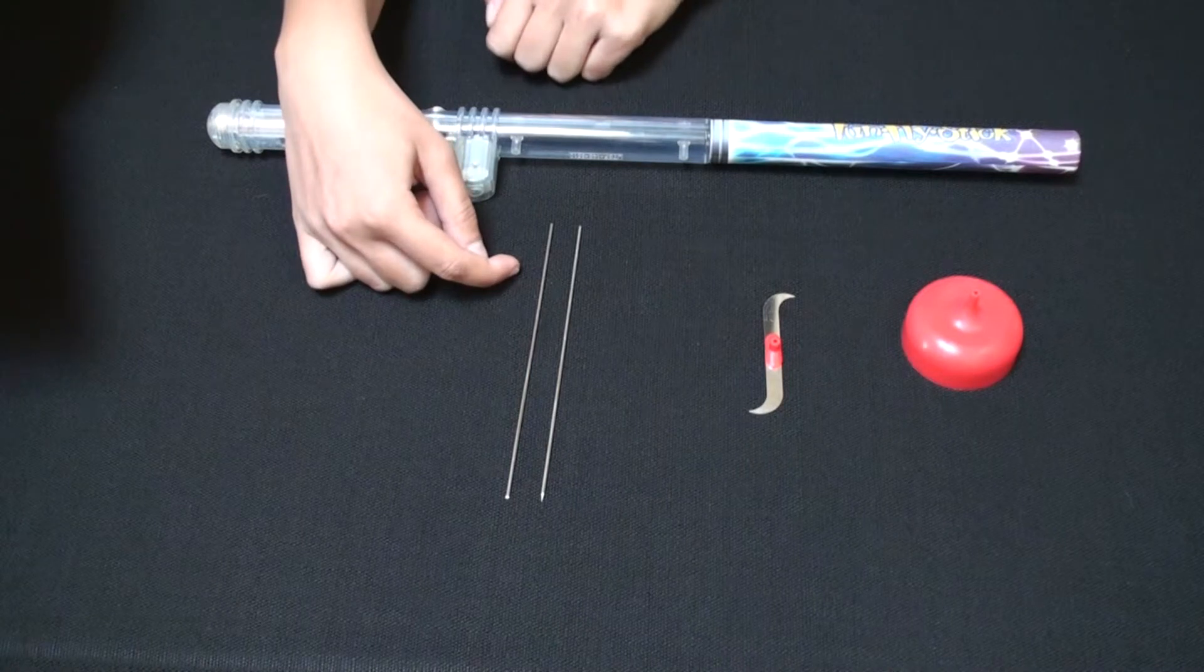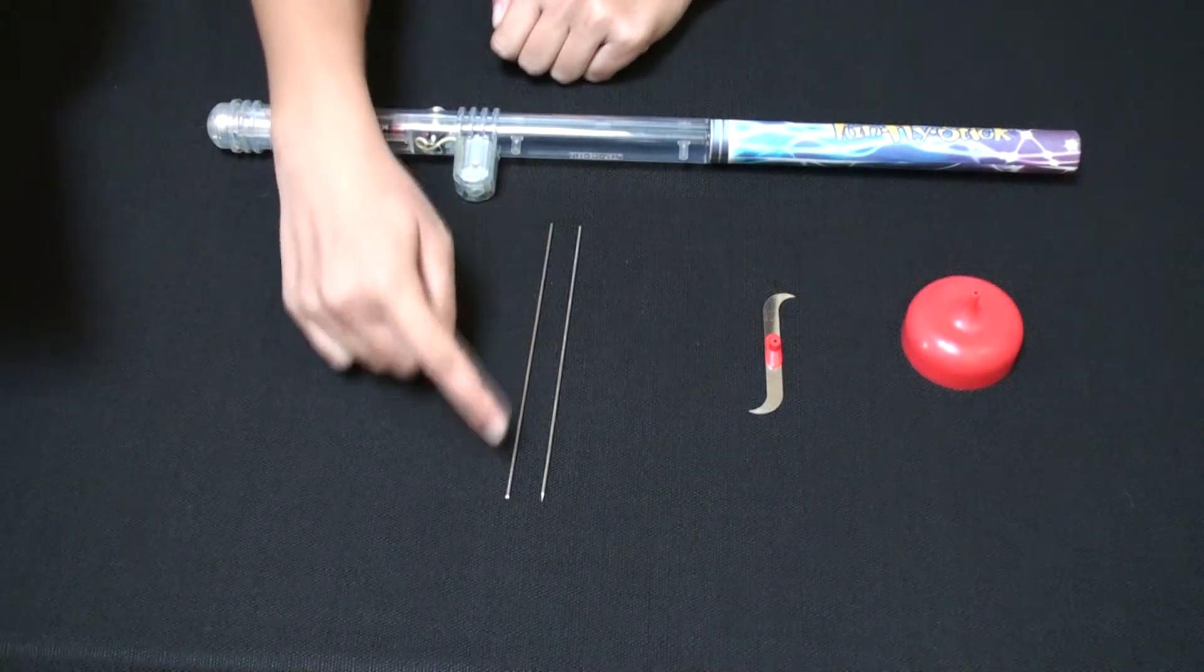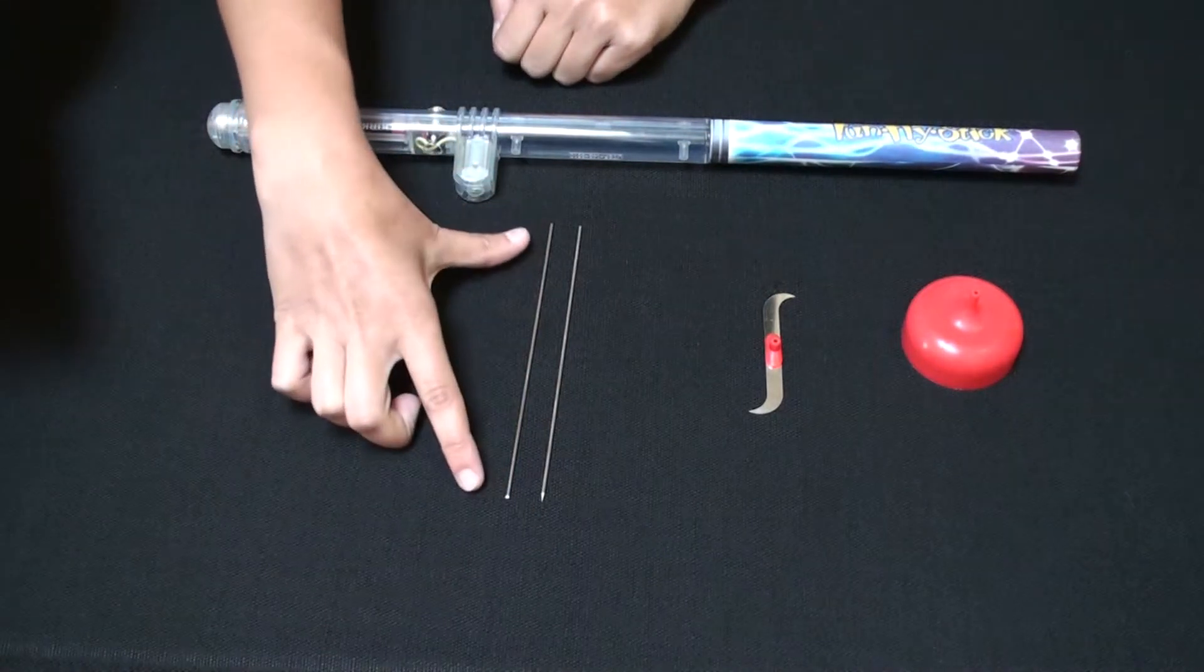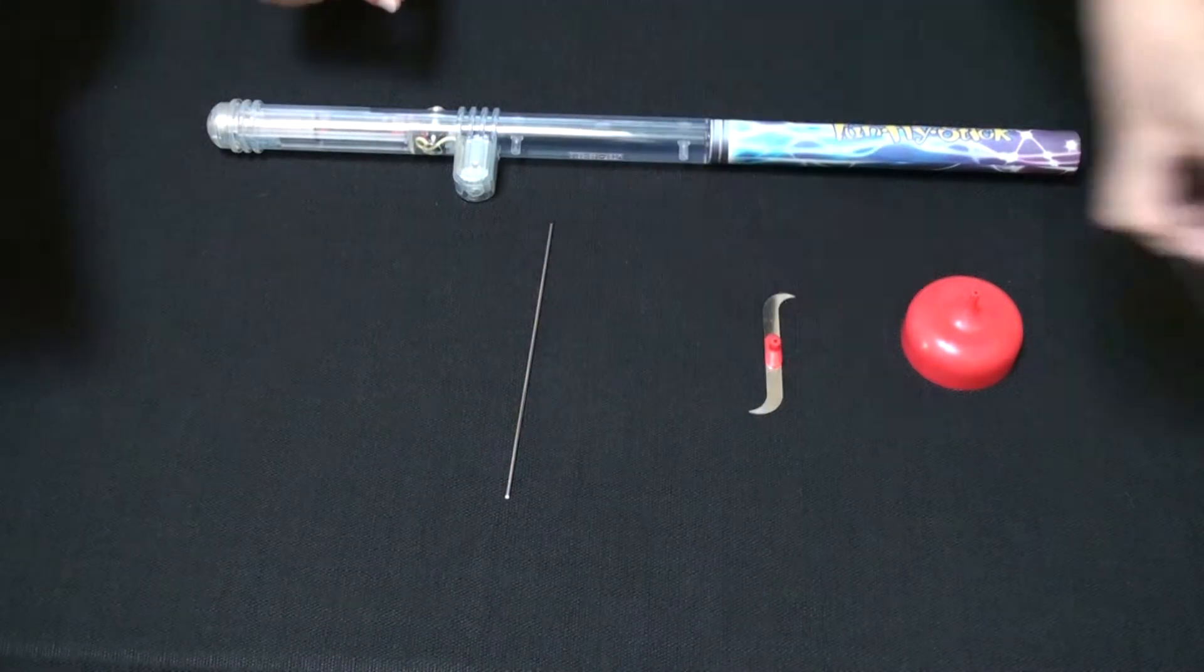This kit comes with two pins, one with two dull ends and one with one dull end and a sharp pointed tip. This experiment only uses the pin with two dull ends.